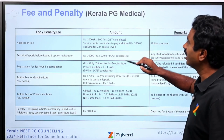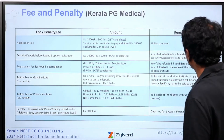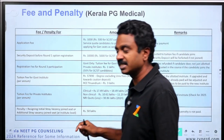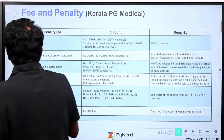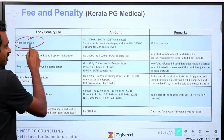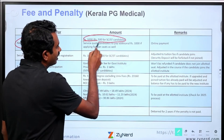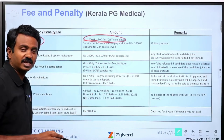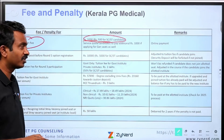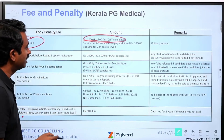Fee and penalty — we have the complete fee details as far as Kerala is concerned. Application fee is rupees 1000 for all candidates, except for SC/ST candidates for which it is 500.